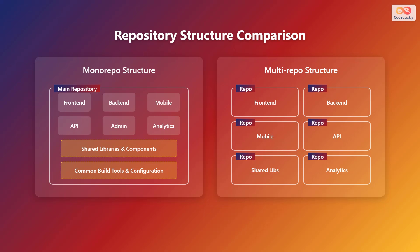On the right, the multirepo structure shows each project residing in its own separate repository. This includes front-end, back-end, mobile API, shared libraries, and analytics, each existing independently.